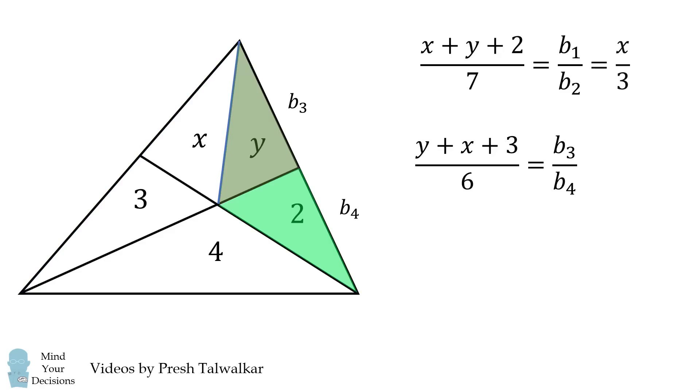Now similarly, if we take a look at these two triangles, the ratio of their areas will also be equal to b3 over b4. So we have y over 2 is also equal to b3 over b4.